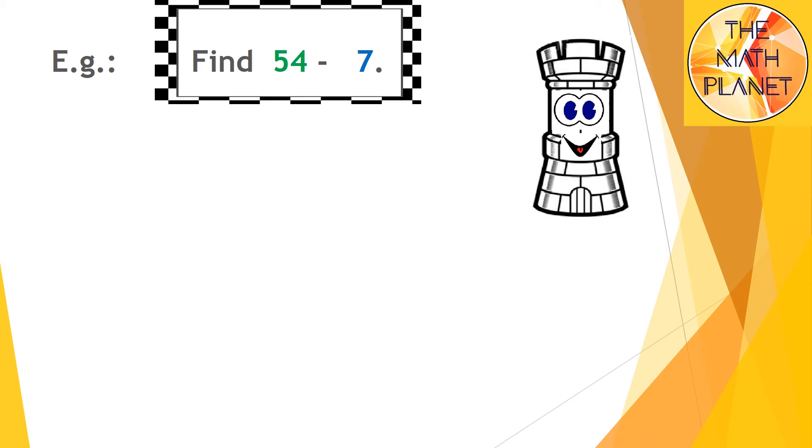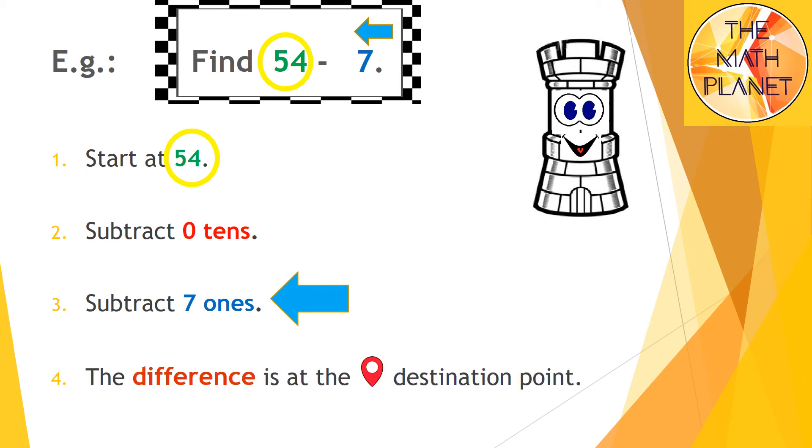Finally, we will find the difference between 54 and 7. My start point is at 54 and then the 7 has no tens, so I will subtract 0 tens or no tens. Then I will subtract 7 ones by moving to the left of the chart, and the difference will be at the destination point.